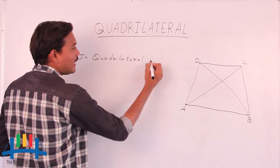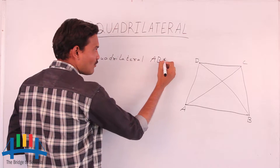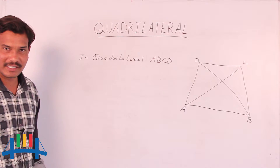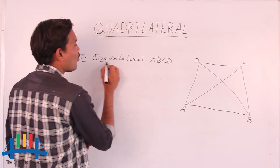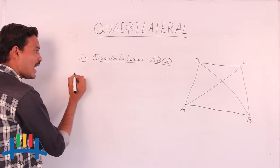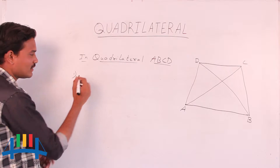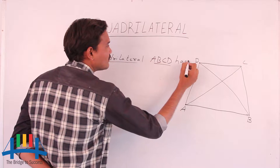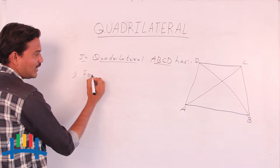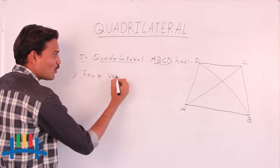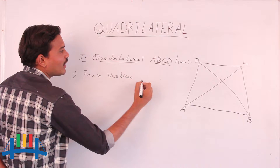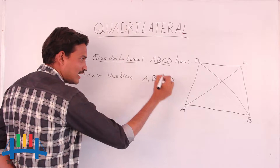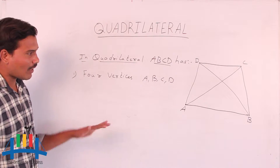This is quadrilateral ABCD with vertices A, B, C, and D. The first property we cover is that a quadrilateral has four vertices. The four vertices in this figure are A, B, C, and D.